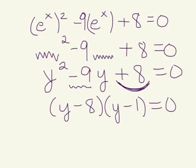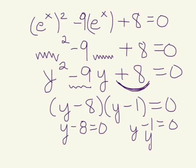And we were able to use the zero product property to say, take each of these factors and set it equal to 0. So y is 1 and y is 8.